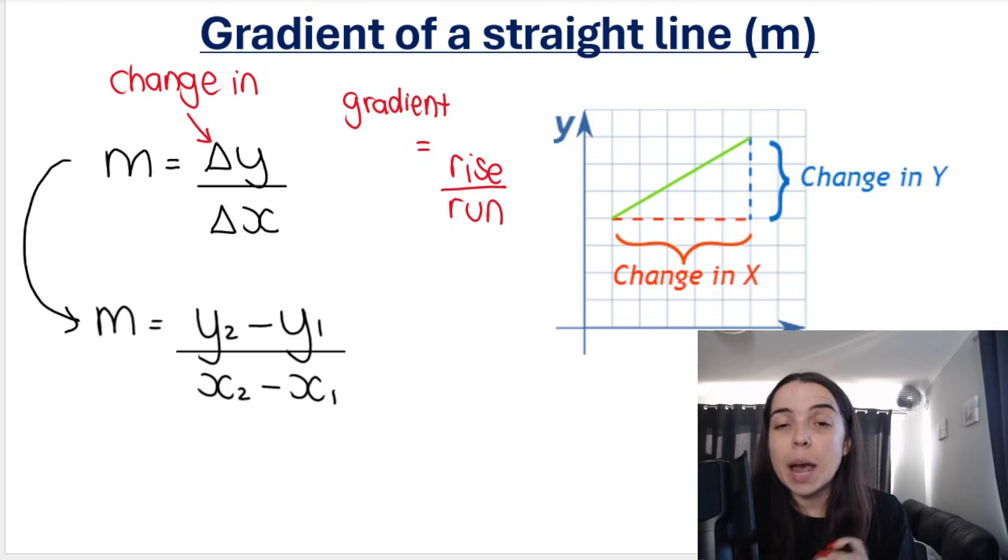Just as a quick recap: to calculate gradient of a line segment or straight line, we do change in Y over change in X. The Y has to be on top. That's Y2 minus Y1 divided by X2 minus X1. The X1, Y1, and all of that comes from the coordinates.